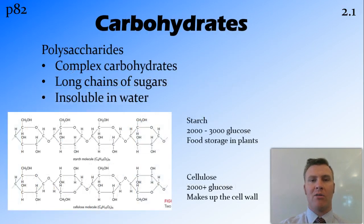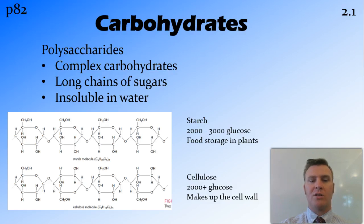We then have polysaccharides, which we call complex carbohydrates. This is what your Weet-Bix mainly consists of — starch and cellulose — with very long chains of saccharides. They are insoluble in water, and this is where you get a lot of your energy from.